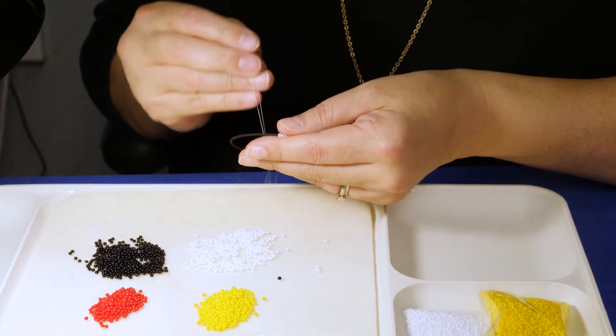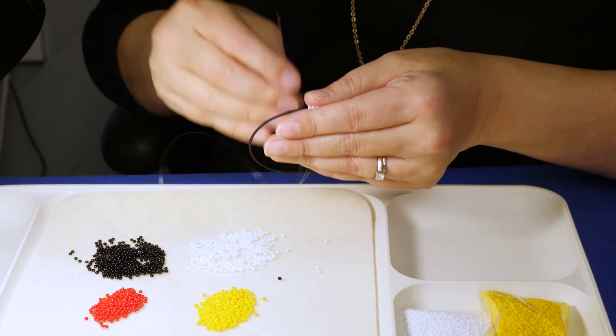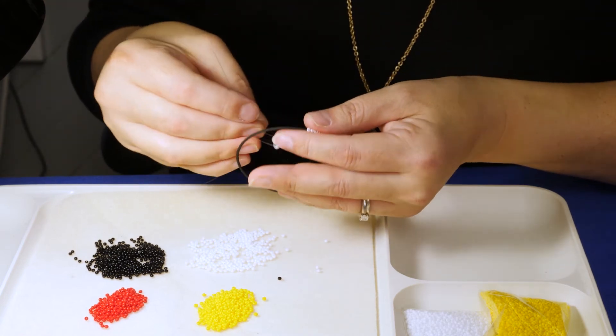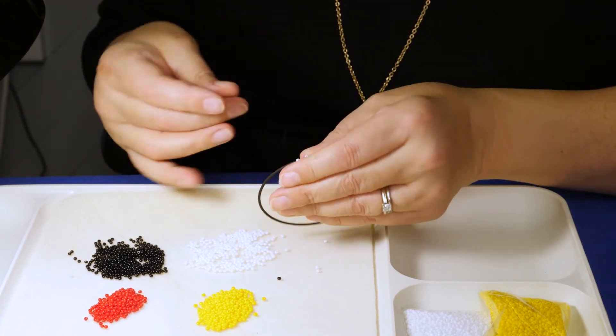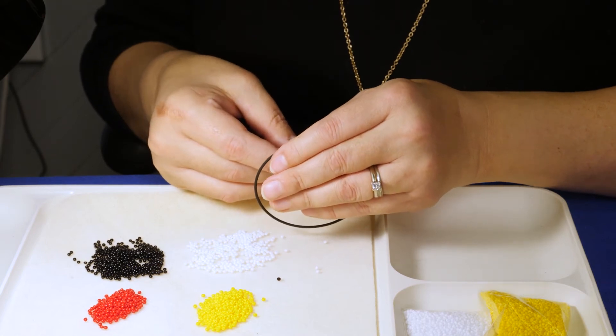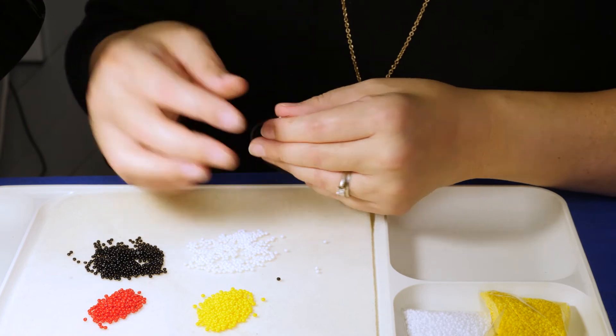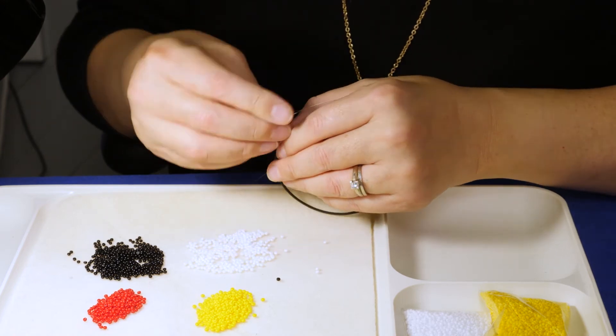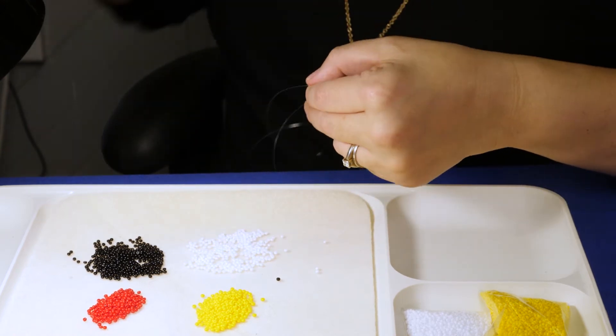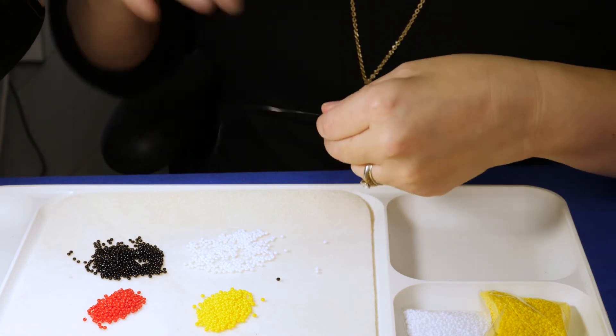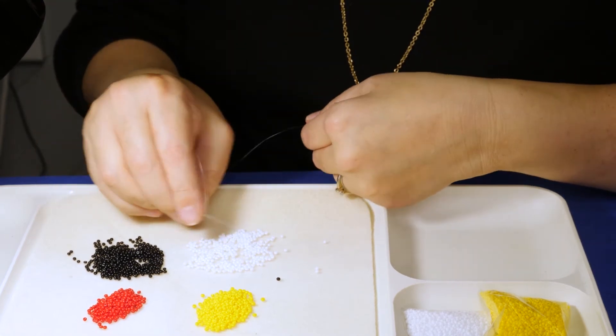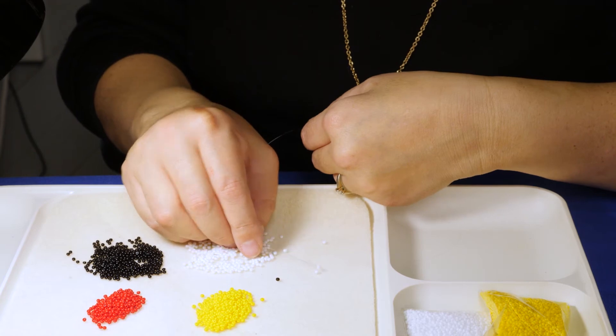Once we get there, then we will trade our colors. We're actually going to pause for a second because I'm going to show you the most important part of this—moving from one level to the next. With these particular earrings we're only doing two levels because just for time and supply-wise it's the easiest, but they actually still look really good.